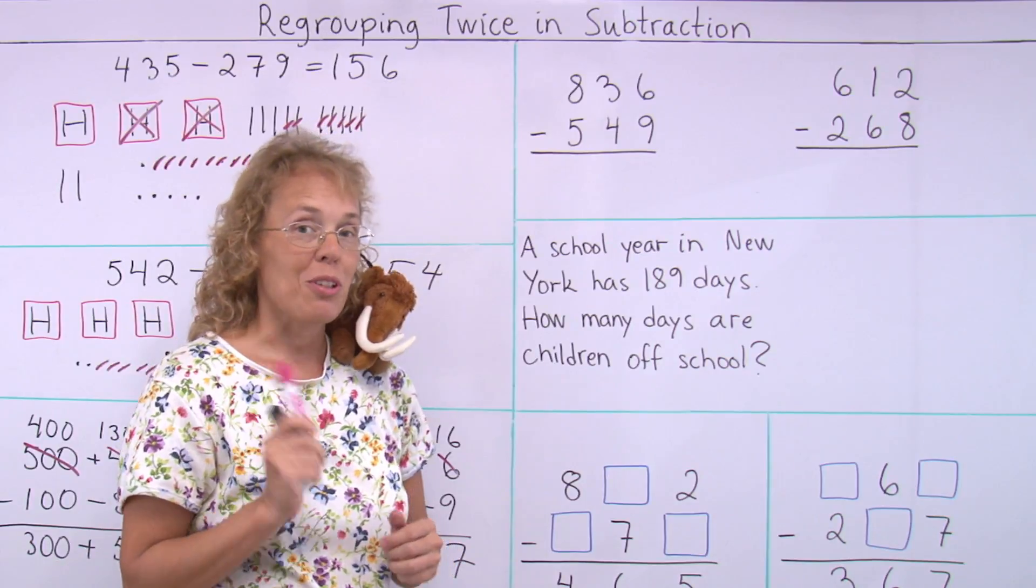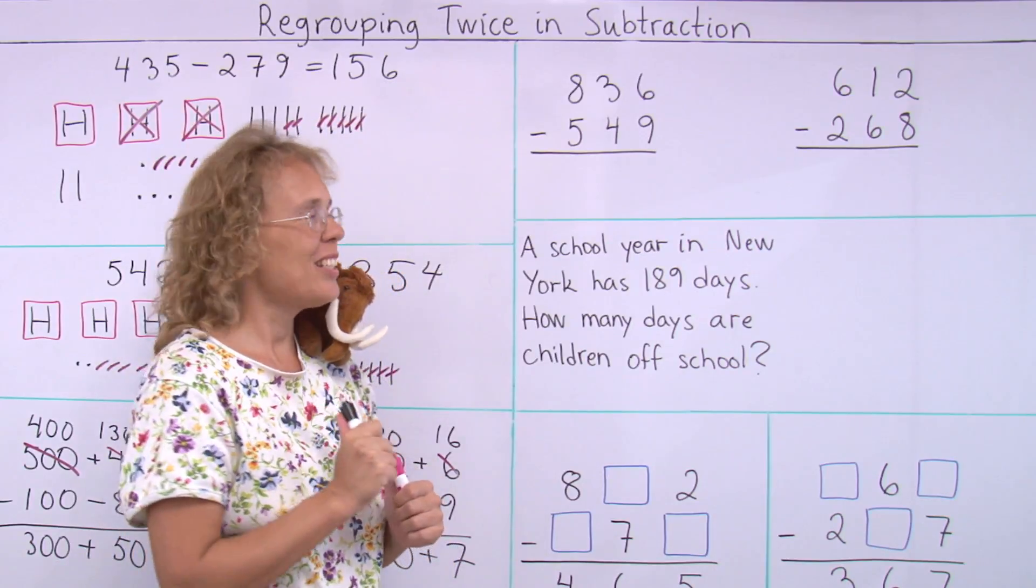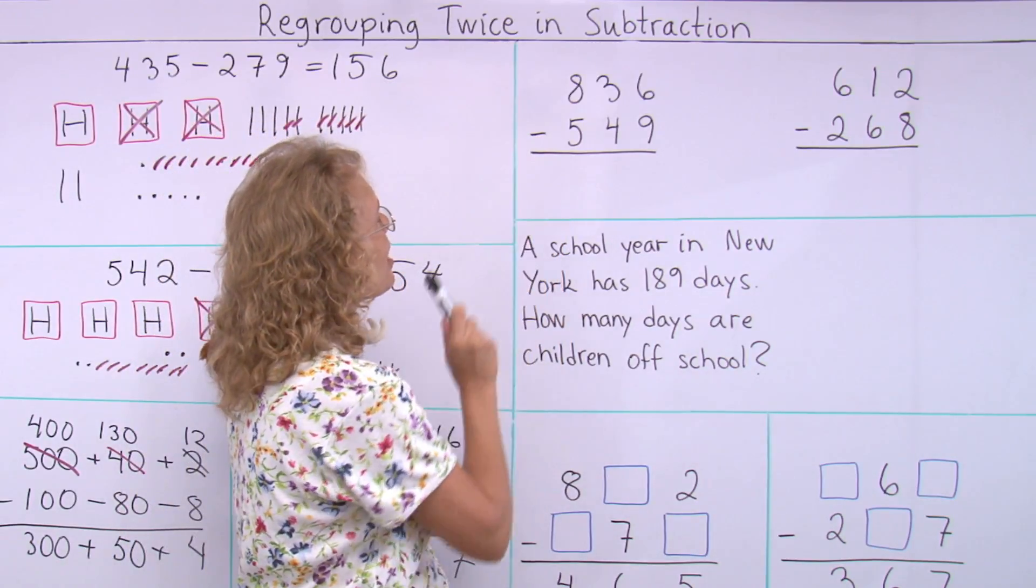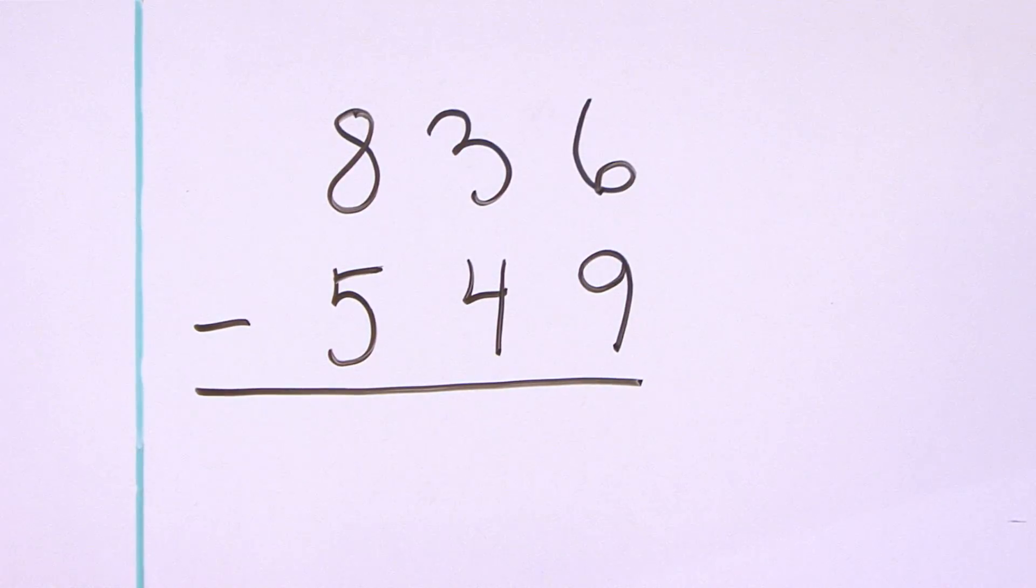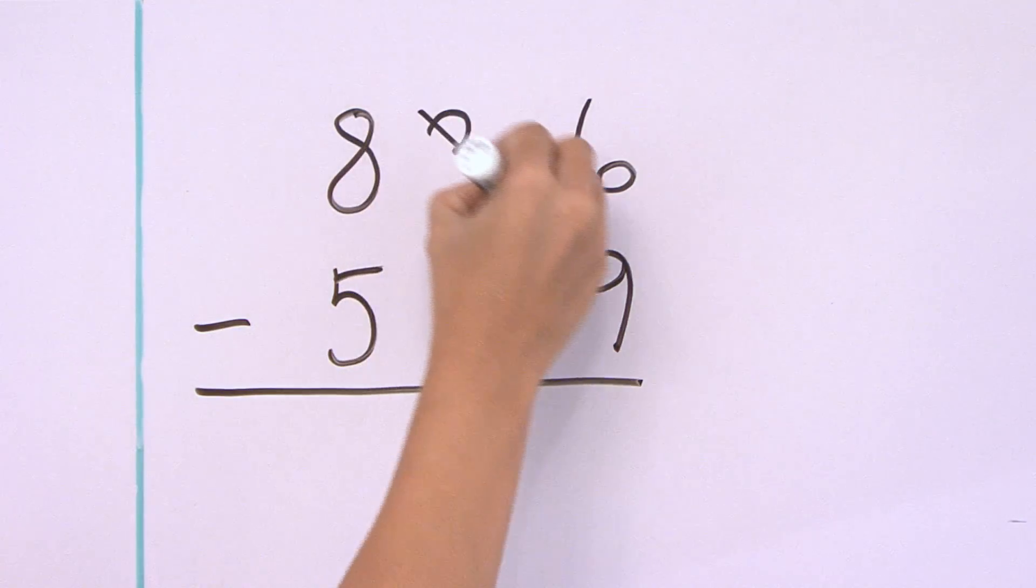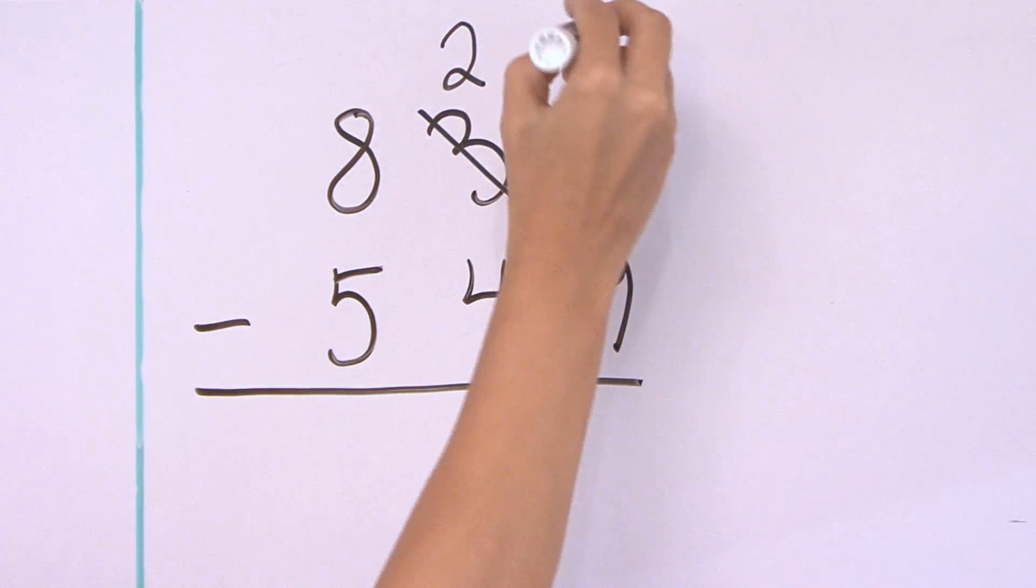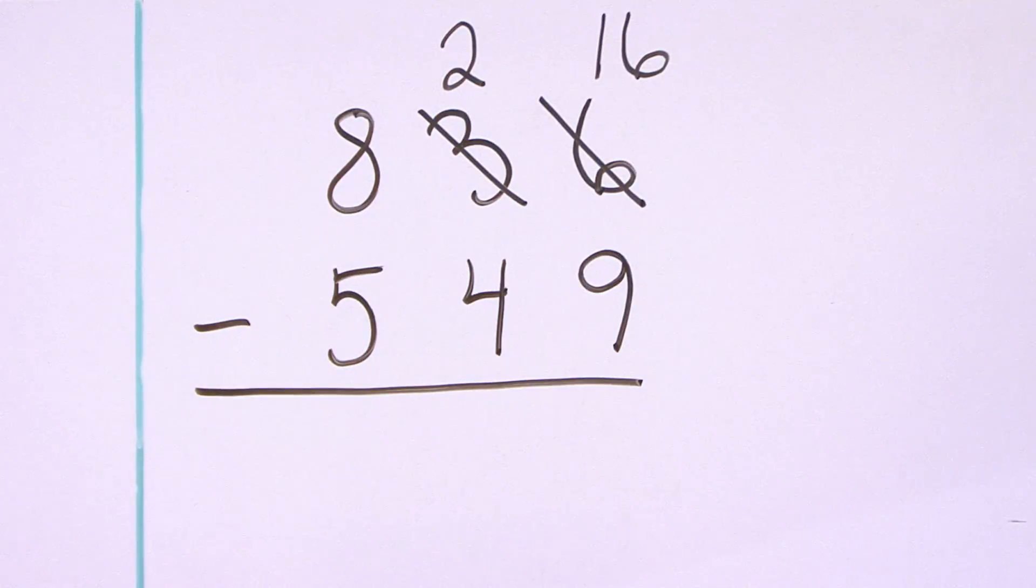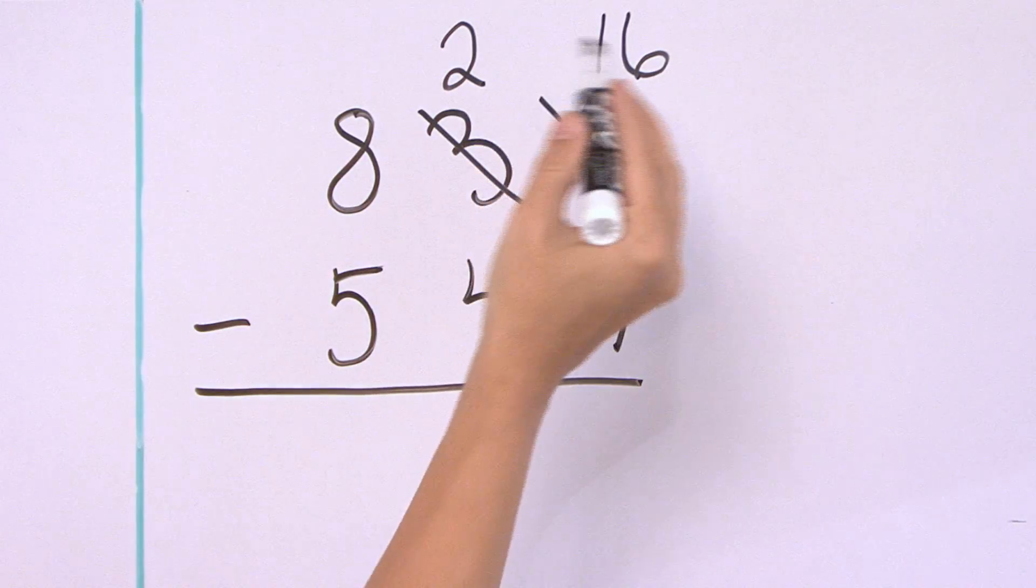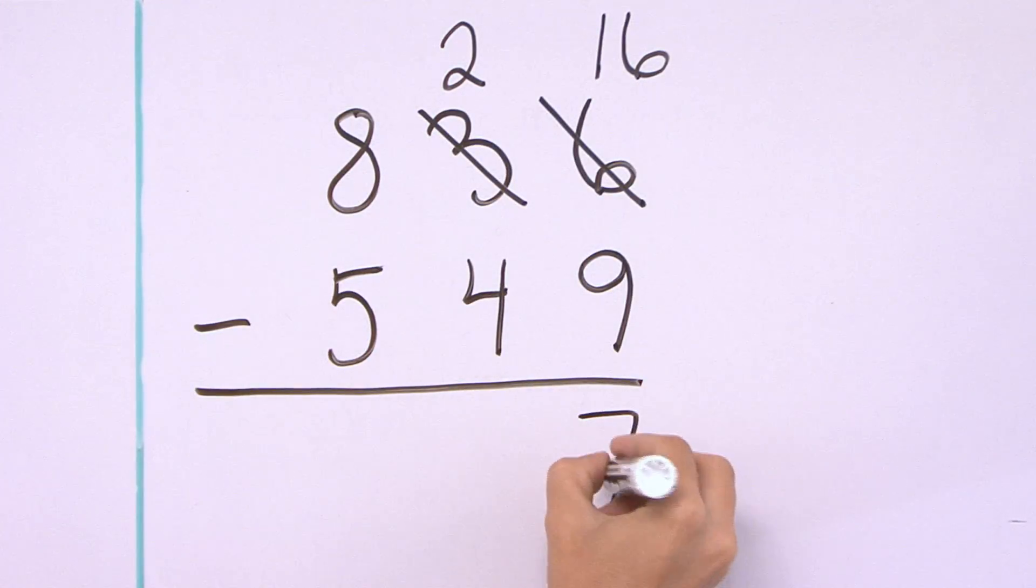And now it is time to learn the usual way to write it. When the two numbers are written under each other. And we need to regroup twice. Six minus nine, you cannot do that, so you will regroup. Take one of the tens, leaves here two tens. And over here, instead of six, we will have sixteen. Ten and six. Now subtract sixteen minus nine, seven.